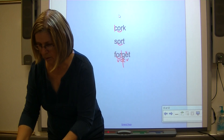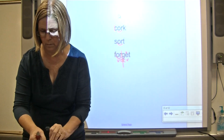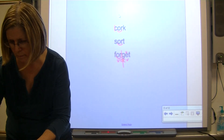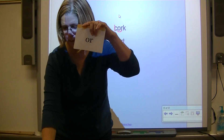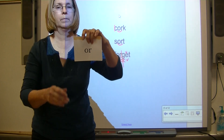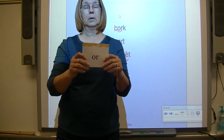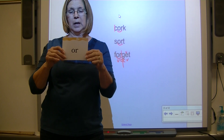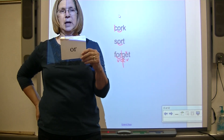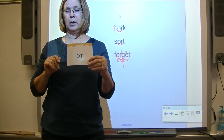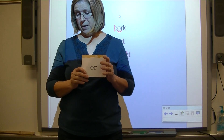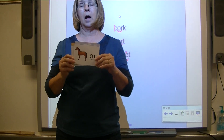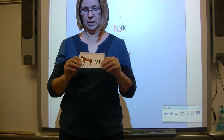Let's look at our new card. This is combination O-R. You need a new keyword picture to go with it. The clue: it's a large animal with four legs, a mane, and a long tail. It often lives on a farm or ranch. What do you think it might be? Horse! Horse - OR. The keyword for combination O-R is horse.